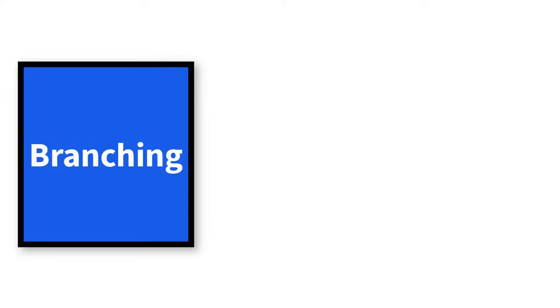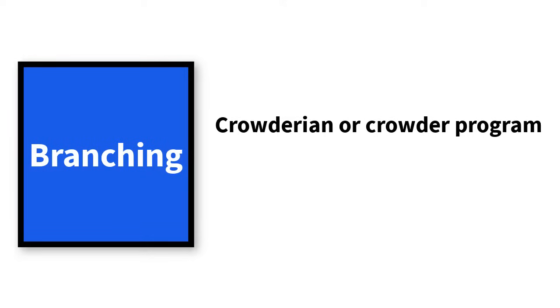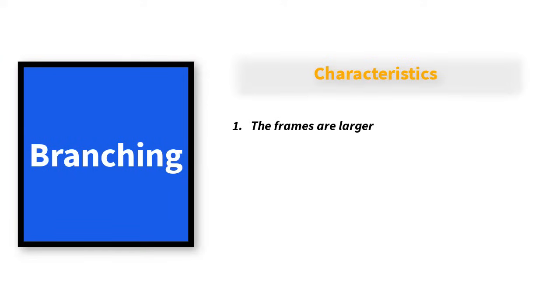Number two is the branching program, also known as the intrinsic or branching program. This is derived from the works of Norman Crowder, so it's called the Crowderian program as well. In this case, the frames are larger — one to three short paragraphs of information are provided. After reading through, the student is exposed to multiple choice questions. The number of options must be more than two, to minimize guesswork — choosing the correct answer by chance is not allowed in the Crowderian program. The students choose one of these options and their choice determines the next frame.